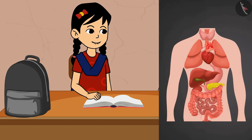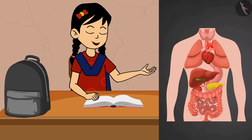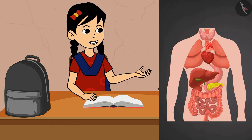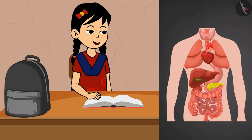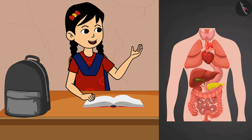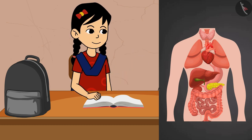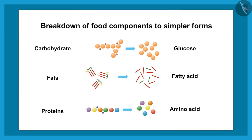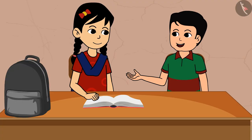The partly digested food reaches the lower part of the small intestine, where digestive juices complete the digestion of the components of food. Here is a list of the breakdown of different food components into simpler forms: carbohydrates break down to form glucose, and fats break down into fatty acids.